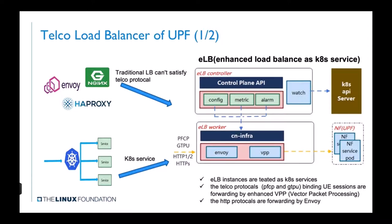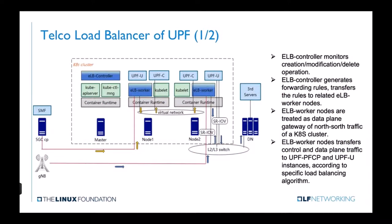ELB also provides UE session information identification and data distribution and binding based on UE information. In our ELB cluster, we set up an ELB controller deployed in the Kubernetes master node and several ELB worker nodes. The ELB controller monitors creation, modification, and deletion operations, generates forwarding rules, and transfers the rules to the related ELB worker nodes. ELB worker nodes act as the data-plane gateway for northbound traffic of the Kubernetes cluster and transfer control and data plane traffic to UPF-PFCP and UPF-U instances.